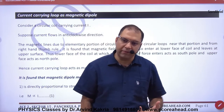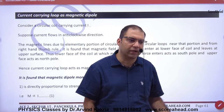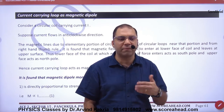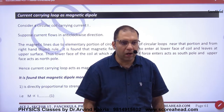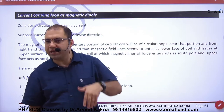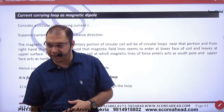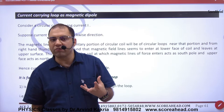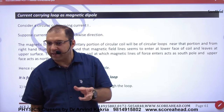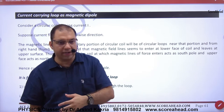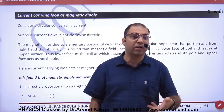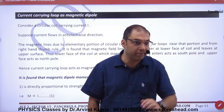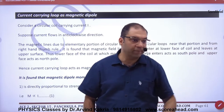If there is a current-carrying loop, it generates a magnetic field B in the center. Because it generates B in the center, a current-carrying loop acts like a magnet.